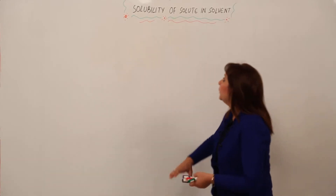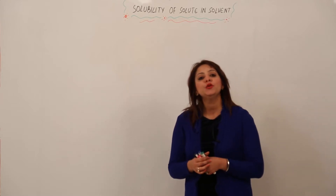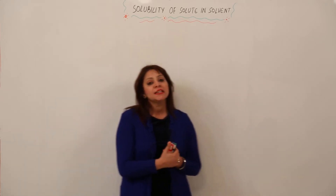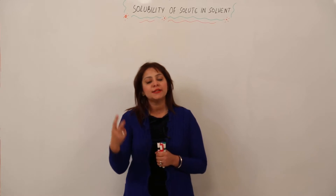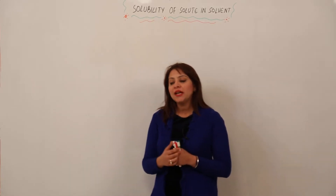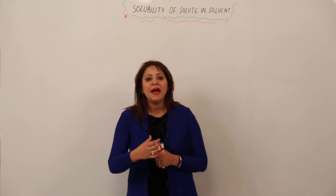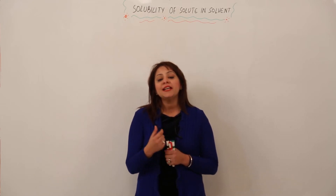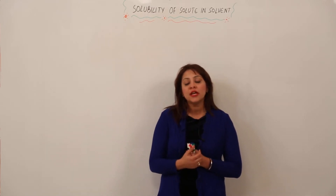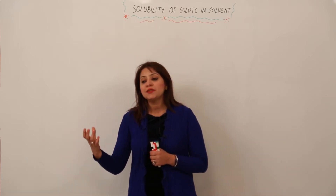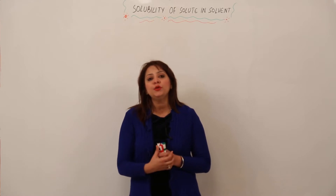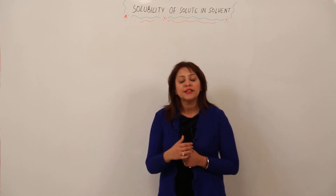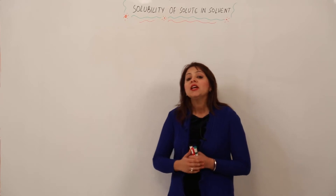We'll be starting with the topic: solubility of solute in a given solvent. As you all know, we have already discussed that a solution consists of two components — solute and solvent. For example, taking a glass of water and adding sugar to it: sugar is the solute present in small amount, and water, taken in large quantity and dissolving the solute, is the solvent. Now we are considering the solubility of solute in a solvent.